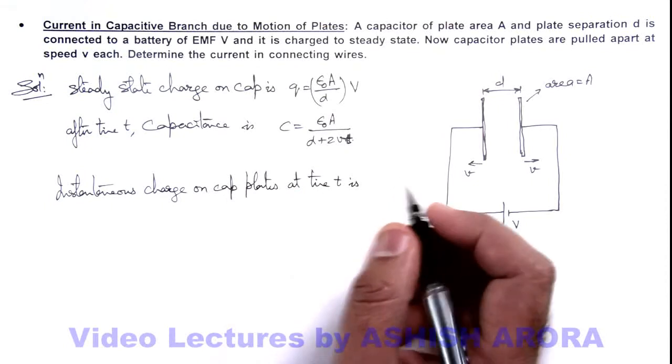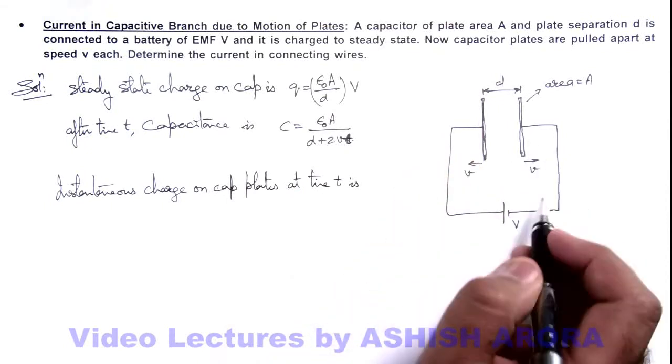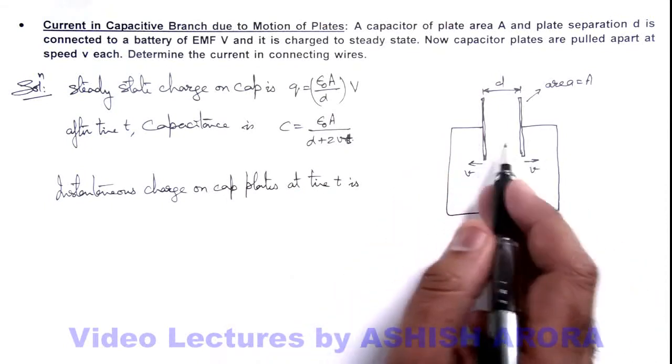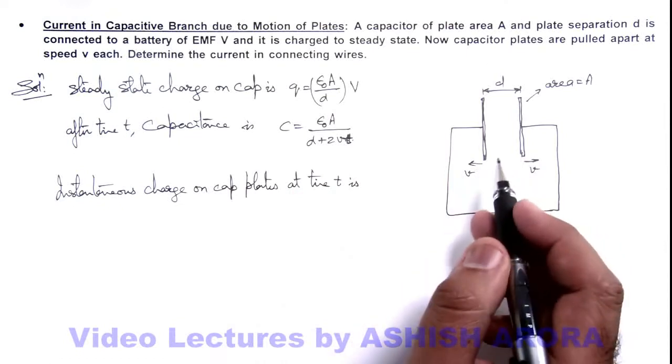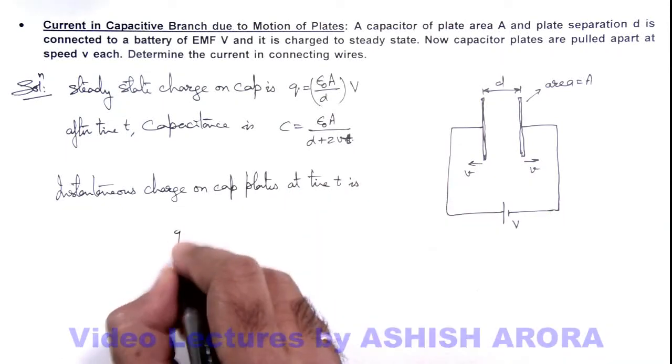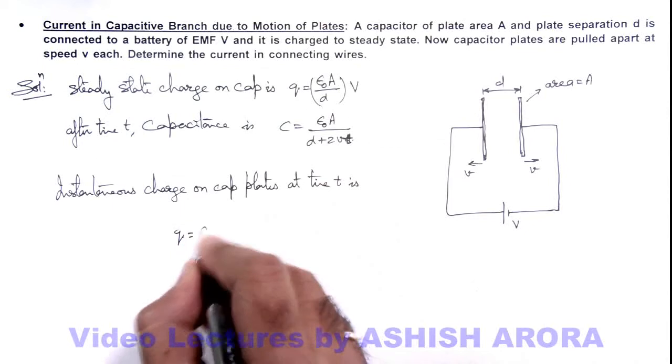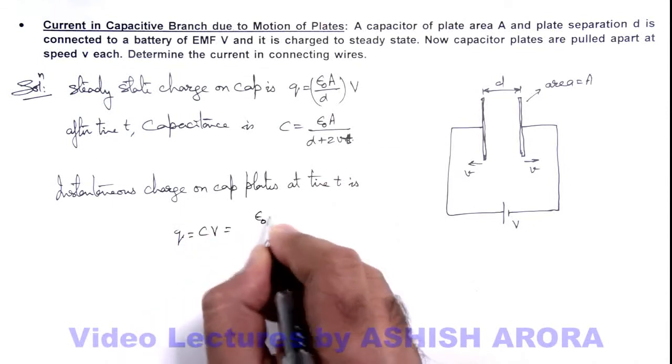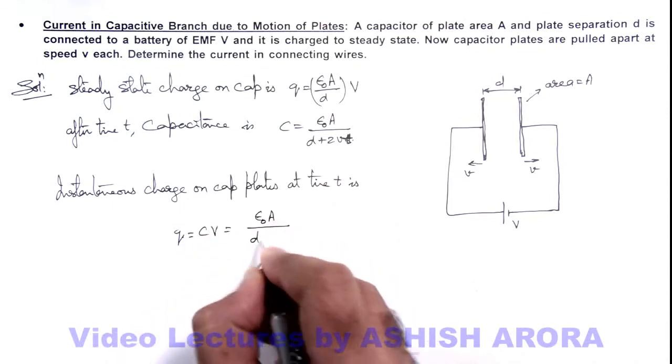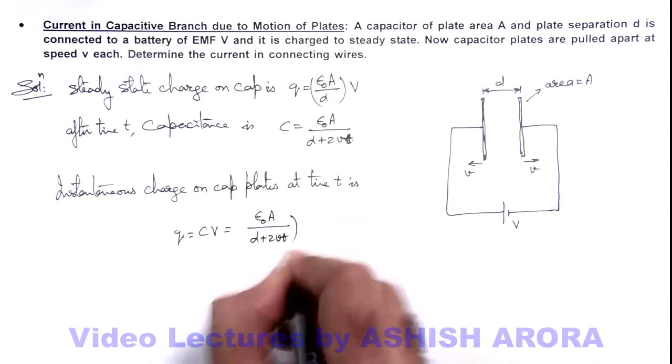As there is no resistance connected here, so steady state will be quickly achieved. So in this situation, at any time the charge can be written as CV, which is equal to ε₀A/(d + 2vt) multiplied by V.